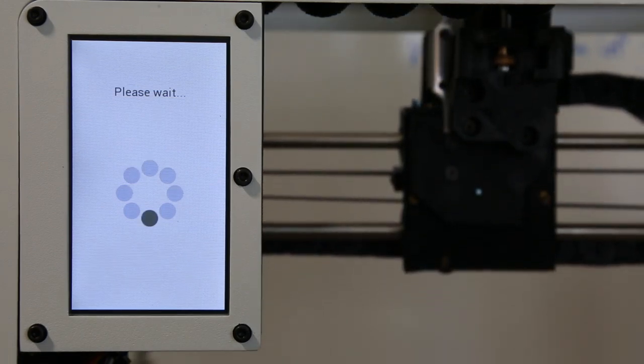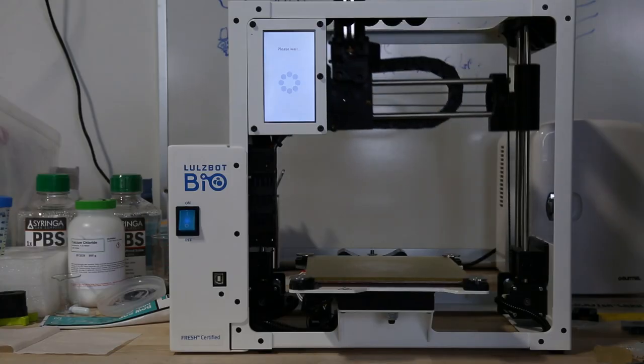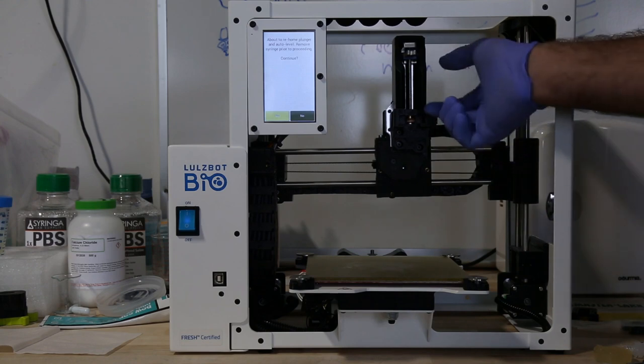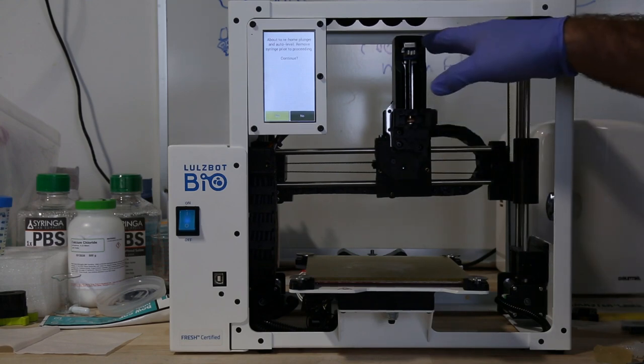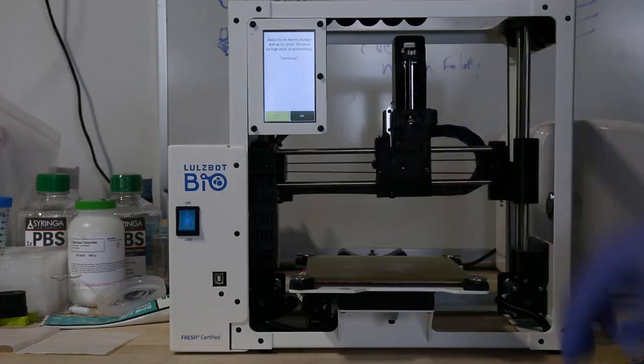And now the carriage is gonna move to the syringe unload or load position. Now if you had a syringe in here you would remove it. After that the machine is gonna level the X gantry and home the plunger to the top.